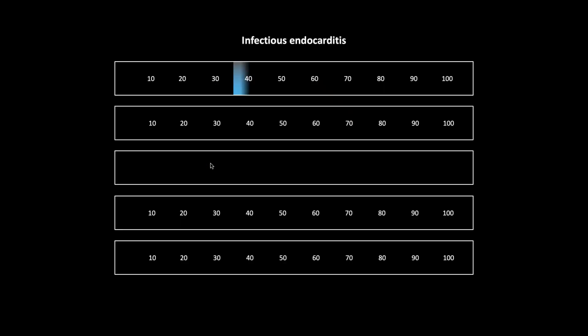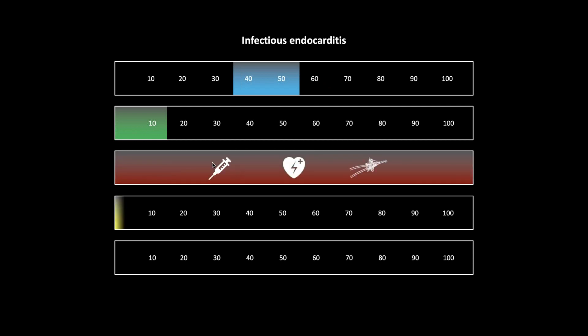Next: infectious endocarditis. This is more common in males between 35 and 55. The annual incidence is 15 out of a hundred thousand — notably three times the rate in the EU, where it is about 5 per hundred thousand, where drugs of all kinds are legal. The risk factors ranking highest are intravenous drug use, defibrillators, and central venous catheters. Mortality is 20% in-hospital but 40% at one year, partly due to recidivism and partly due to lasting complications.